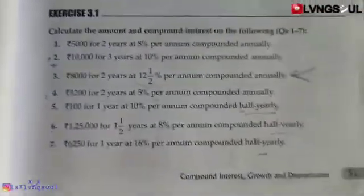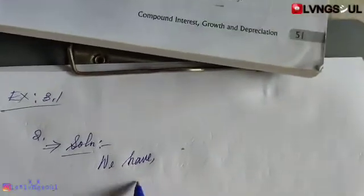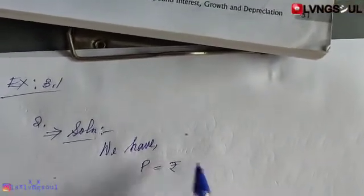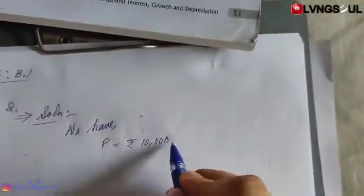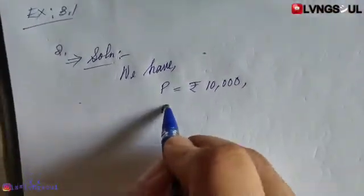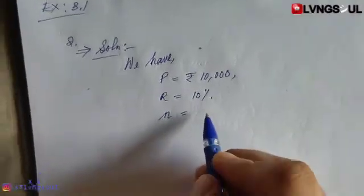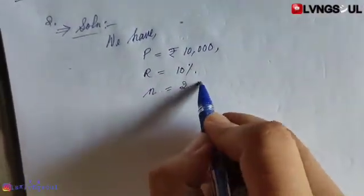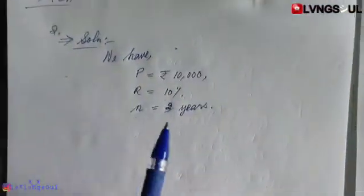Question number 2 — this is the formula, this is the solution. Question number 1: Principle is 10,000. Interest rate is 10% compound, 3 years.